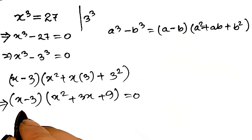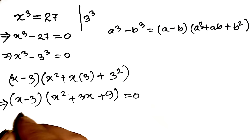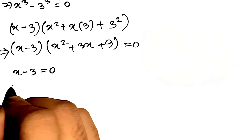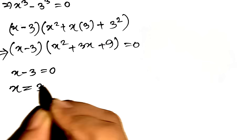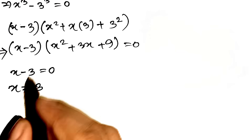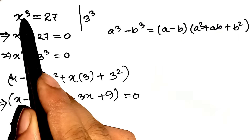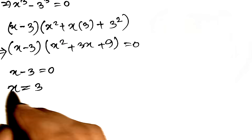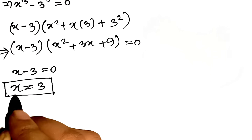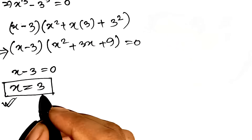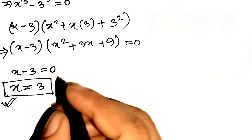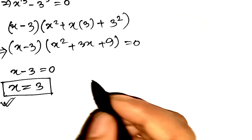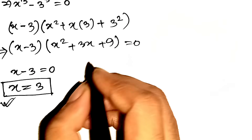Let's tackle the easy one first — that linear factor, x minus 3 equals 0. This is like the warm-up pitch. Solve for x: add 3 to both sides and we get x equals 3. Let's double check: if x is 3, then 3 cubed is 3 times 3 times 3, which is 27. That fits x cubed equals 27 perfectly. So x equals 3 is one of our solutions, and it's a real number. Since we're dealing with a cubic equation, we're expecting up to 3 roots, so let's move on to the quadratic factor to find the others.